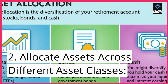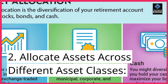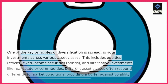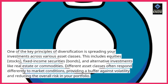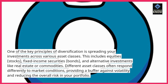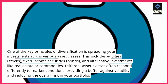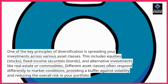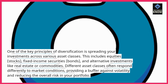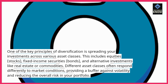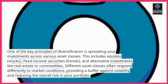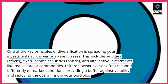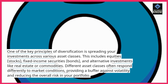Strategy 2: Allocate assets across different asset classes. One of the key principles of diversification is spreading your investments across various asset classes. This includes equities, stocks, fixed income securities, bonds, and alternative investments like real estate or commodities. Different asset classes often respond differently to market conditions, providing a buffer against volatility and reducing the overall risk in your portfolio.